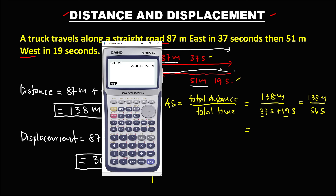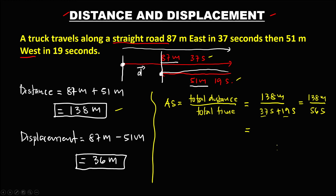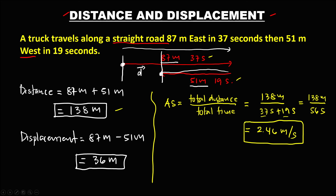That gives us 138 divided by 56, which equals 2.46. So the average speed equals 2.46 meters per second.